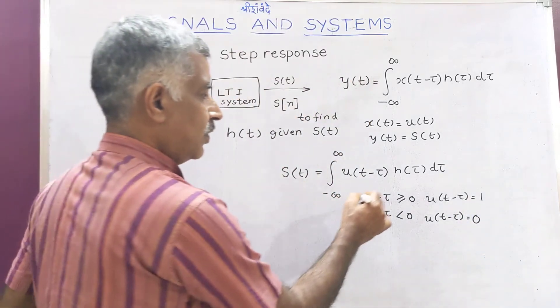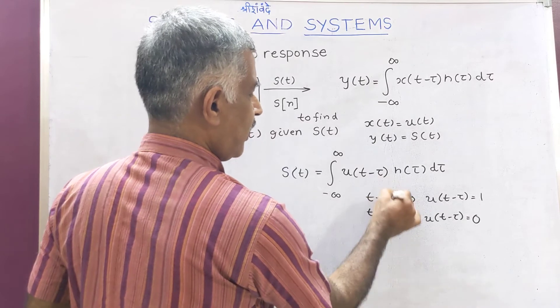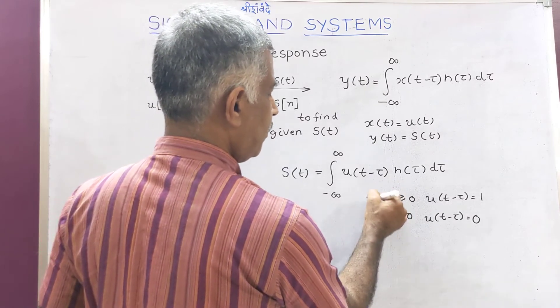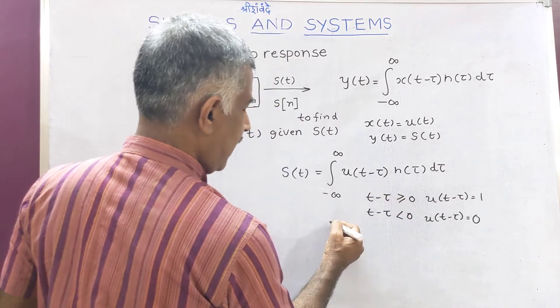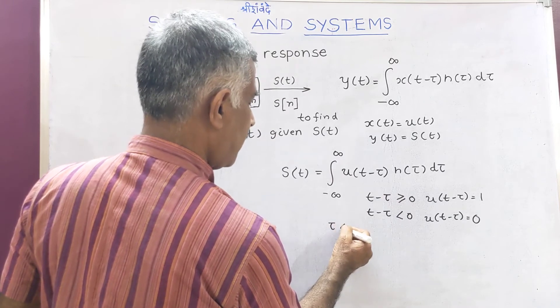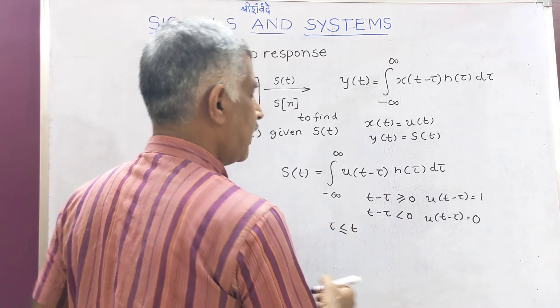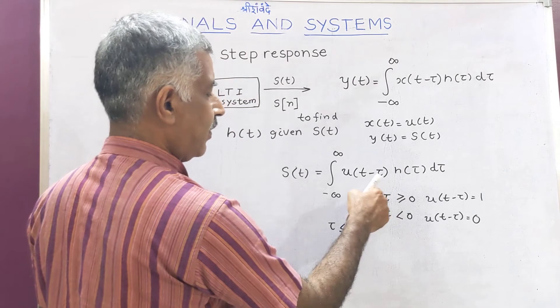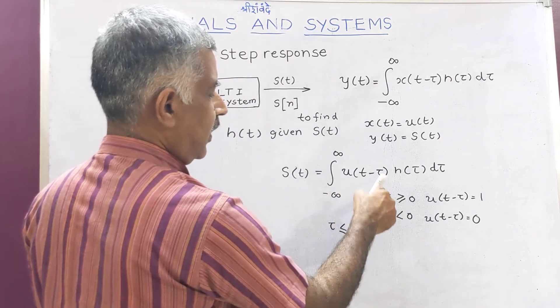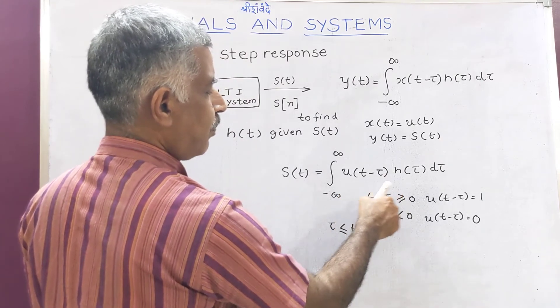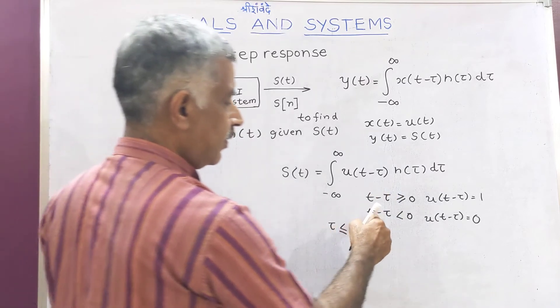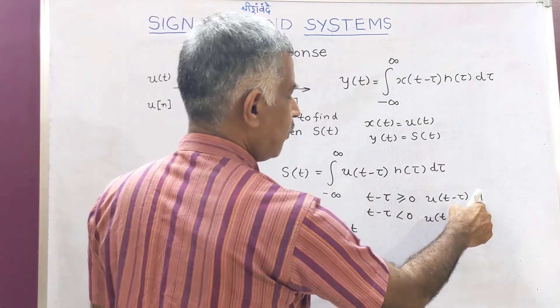Now, for this to become positive, tau must be less than or equal to T. When tau is less than T, then negative of a negative number becomes positive, and the value of the function is 1.